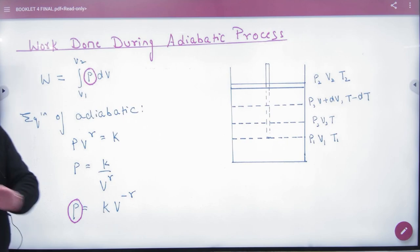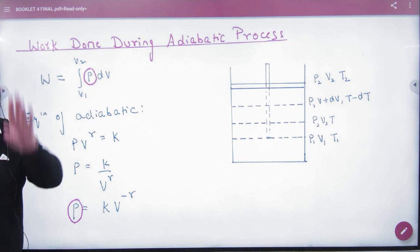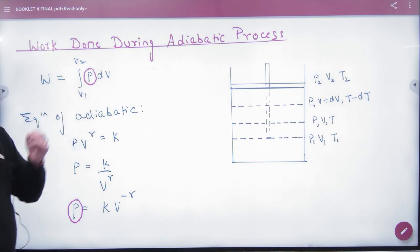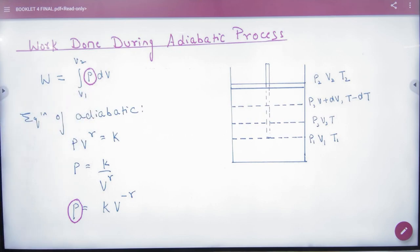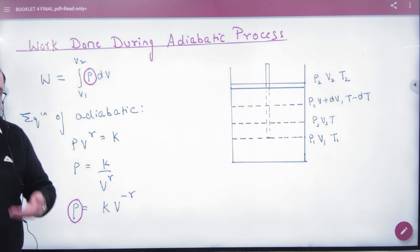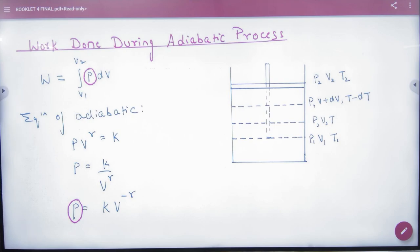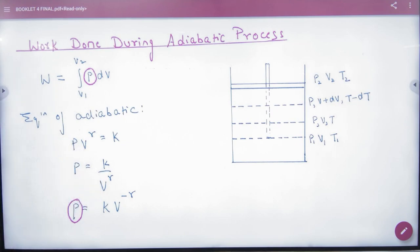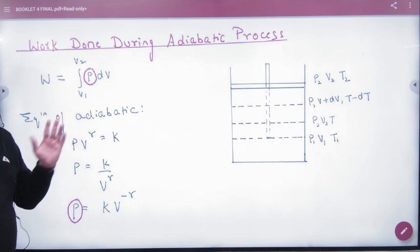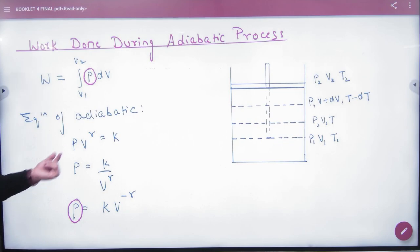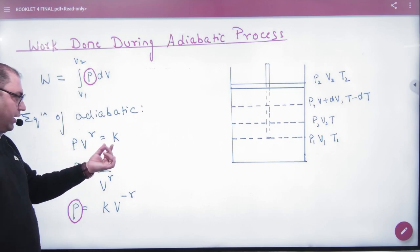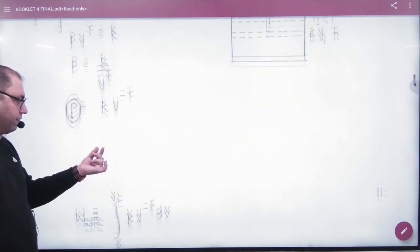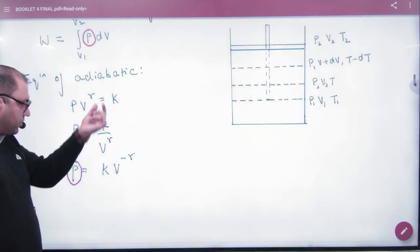Any process of the world, mathematically work done - the first step is PdV integration, V1 to V2. Now the second step is different because every process equation is different. What is the adiabatic equation? PV raised to power gamma is a constant. So PV raised to power gamma equals constant K. We start here. So what is the P value? K upon V raised to power gamma. V raised to power gamma goes up, so K V raised to power minus gamma.